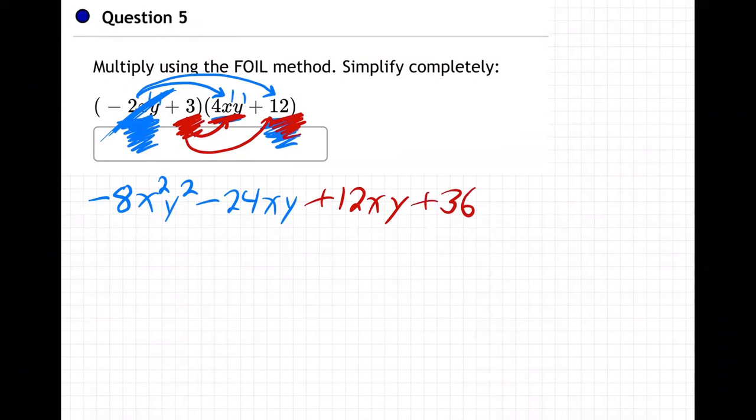Oh, by the way, they call it FOIL because you can think of it as first, outer, inner, last, first, outer, inner, last. That's what they mean here. If you want, this is the first times the first. These are the two outer, outer. These are the two inner. This is last. That's just another way to think about it. I don't think it's super helpful, but that's what they mean. That's another way. I just think first goes to both. Second goes to both. All right. Anyway, getting back to it.